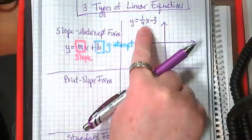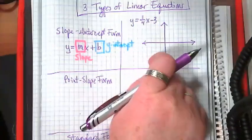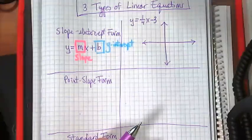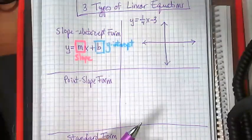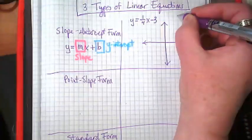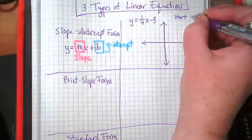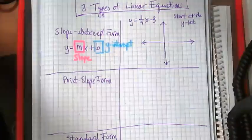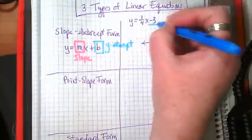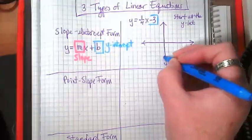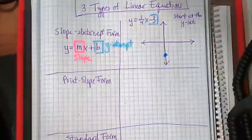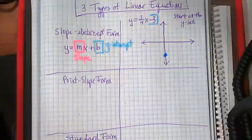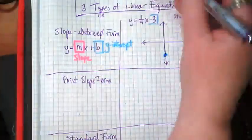We're going to graph the equation y equals 1 over 4x minus 3. We've been doing this for a few days, where do we start graphing this equation? We want to start at the end. We want to start with the y-intercept. So we're going to take this minus 3 right here, and we're going to put it down on the y-axis.